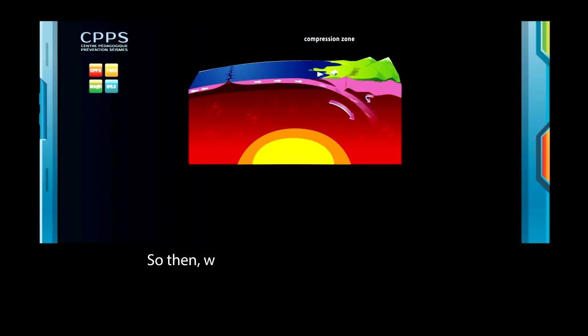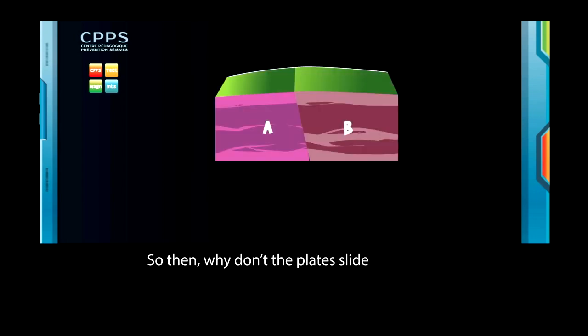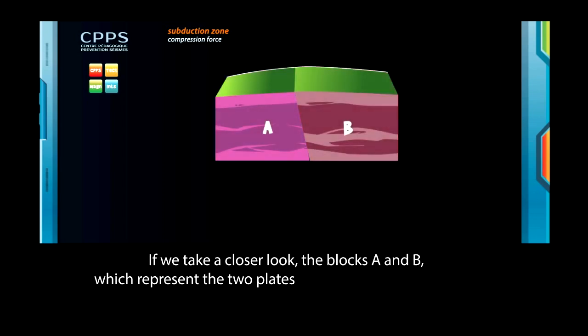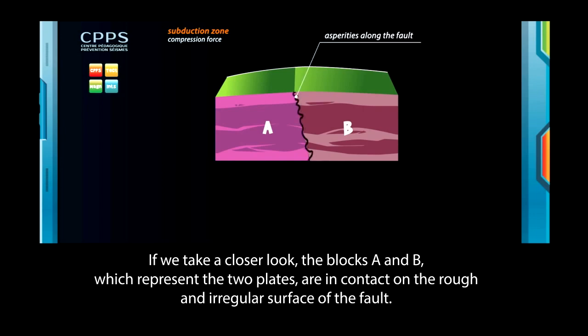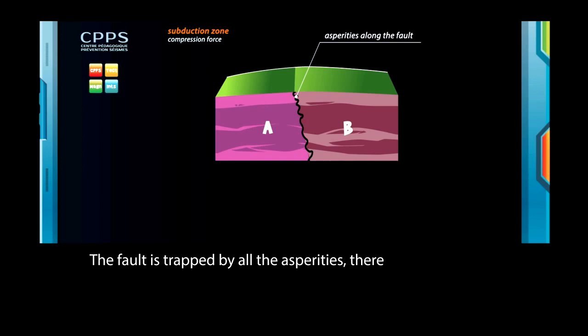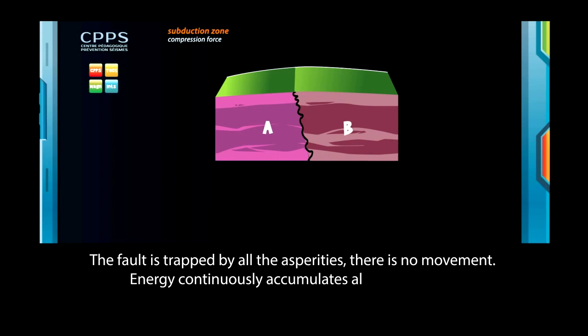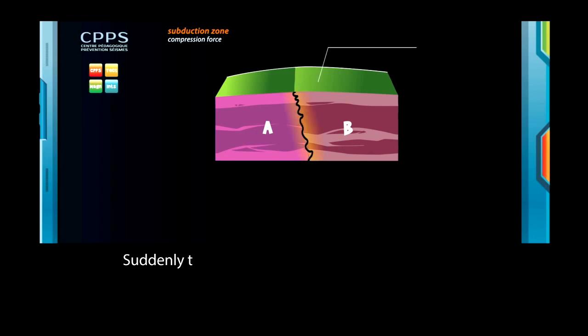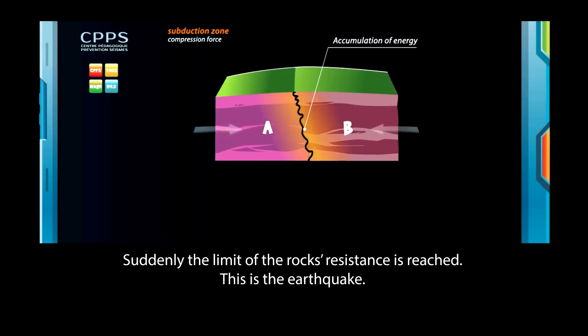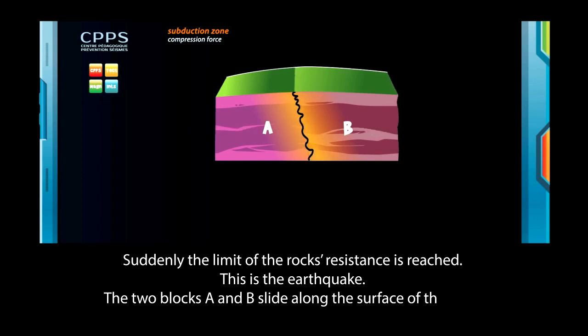So then, why don't the plates slide so easily? If we take a closer look, the blocks A and B, which represent the two plates, are in contact on the rough and irregular surface of the fault. The fault is trapped by all the asperities. There is no movement. Energy continuously accumulates along the faults. Suddenly, the limit of the rock's resistance is reached. This is the earthquake. The two blocks, A and B, slide along the surface of the fault.